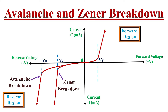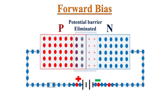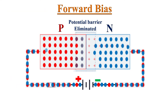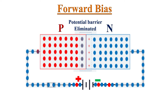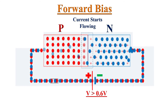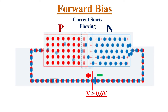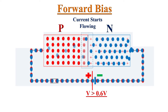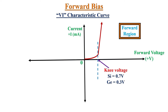Hello friends, welcome to the YouTube channel Electronics. Today we will discuss avalanche breakdown and Zener breakdown. In a previous video on PN junction diode, we saw that during forward bias the potential barrier gets eliminated when the applied voltage is greater than the threshold voltage, and current starts flowing through the PN junction. This threshold voltage is 0.7 volts and 0.3 volts for silicon and germanium diodes respectively.